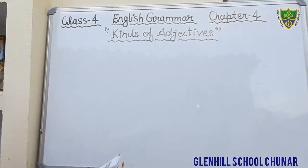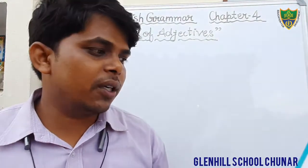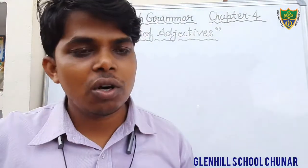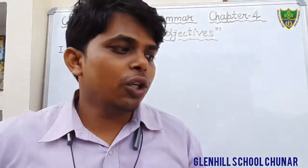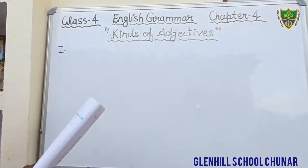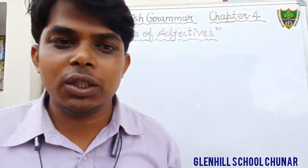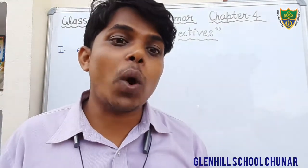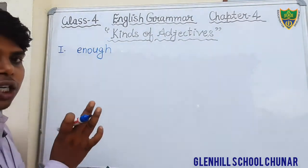Let's see the first question. Question number 1: Don't you have enough money to buy a car? Here, the word 'enough' denotes quantity — enough money, how much money? Enough money. It shows quantity, not quality. So this is a quantitative adjective — adjective of quantity.